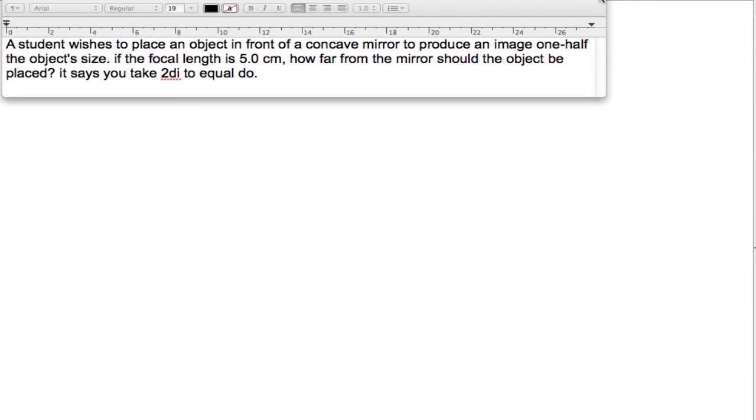Okay, we have another Physics 30 lens question sent by another student. The question states: a student wishes to place an object in front of a concave mirror to produce an image one-half the object size. If focal length is 5.0 centimeters, how far from the mirror should the object be placed?